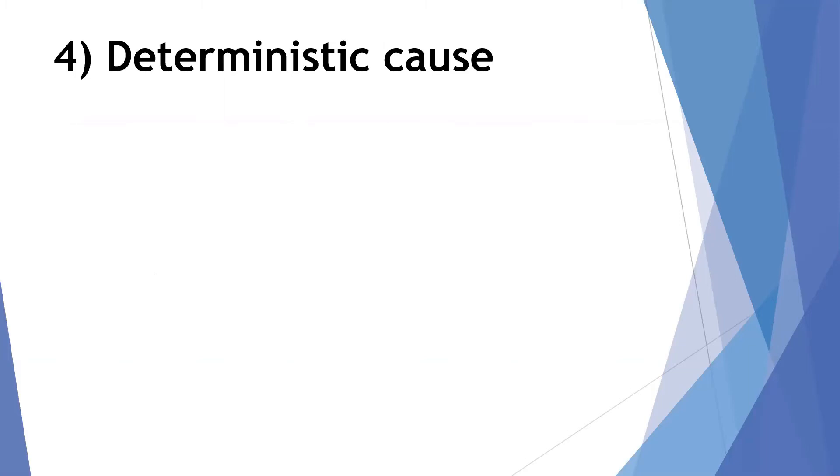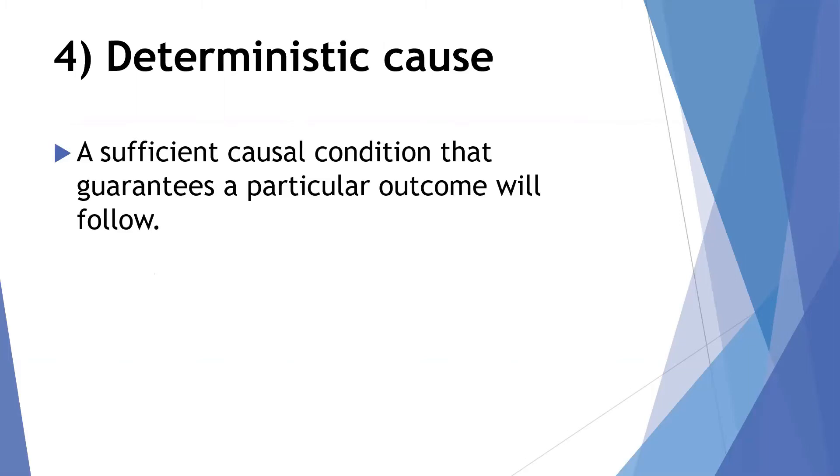A deterministic cause is a sufficient causal condition. So we won't really worry about this and focus on it much. But it is a type of sufficient cause. And the idea here is that it's going to guarantee that particular outcome. There's no way that it could be interrupted between the cause and the effect. So sometimes when people talk about a deterministic cause, they're talking about a sufficient cause. Those are nearly identical. We'll just say that the deterministic cause has that guarantee to it.